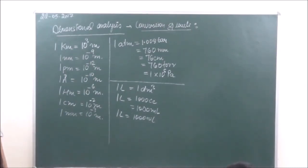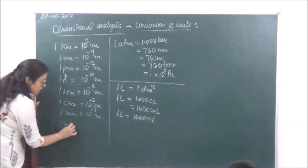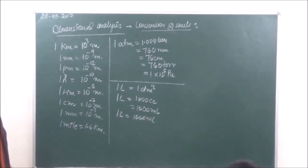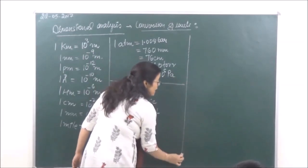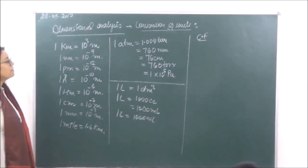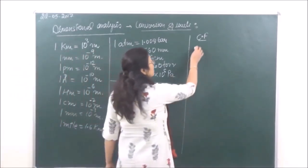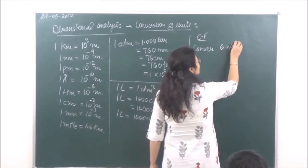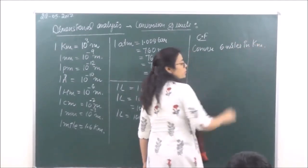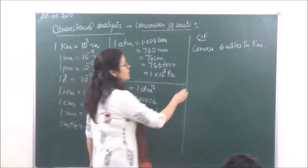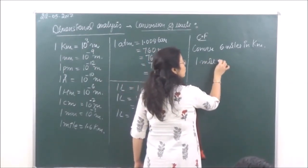One liter is equal to 1000 ml. Similarly, one more unit you can use: one mile that is equal to 1.6 km. So these are a few units which you should know. Now we can use a factor which is known as a conversion factor. For example, convert 6 miles into kilometers.